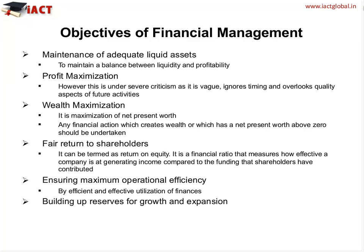The next objective is profit maximization. Profit maximization is not a very good objective because it is under severe criticism — it is vague, it ignores timing, and it overlooks the aspect of future activity. It is vague because it doesn't explain whether the objective is short-term or long-term. For example, if a firm continues to run its business without maintenance of its machinery, they may show higher profit because they are not charging depreciation in the profit and loss account. However, in the long run, there will be high costs in the replacement and repair of machinery.